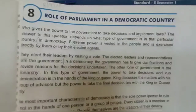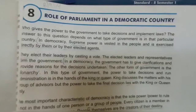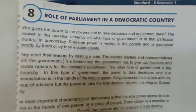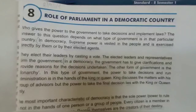The Prime Minister hands over one or more departments to each minister. The ministers, along with the Prime Minister, together take administrative decisions. The elected members of the Legislative Assembly of each state elect the members of Rajya Sabha. There are in all 250 members in Rajya Sabha — 238 are elected and the remaining 12 are appointed by the President.